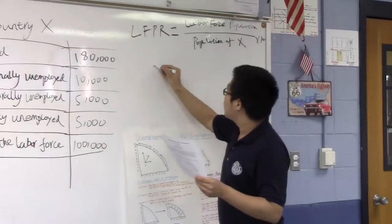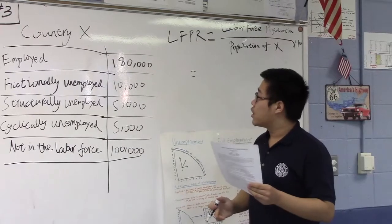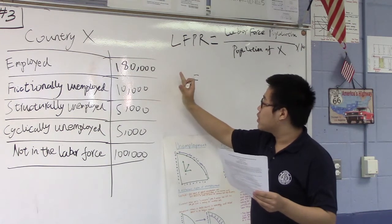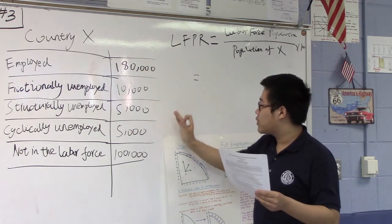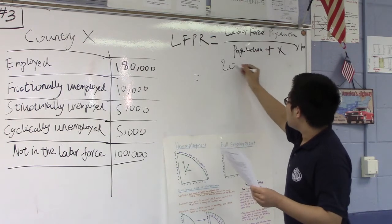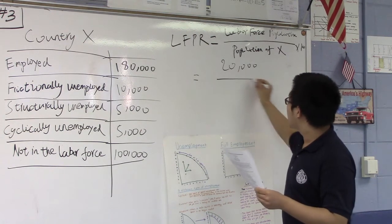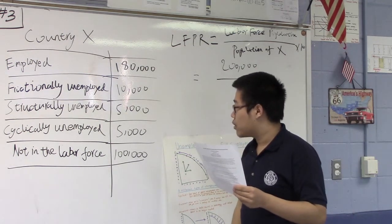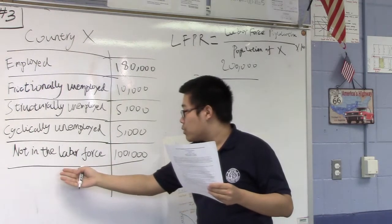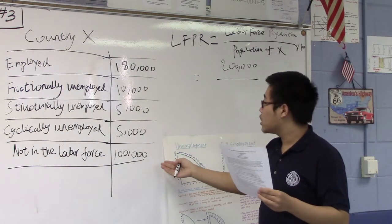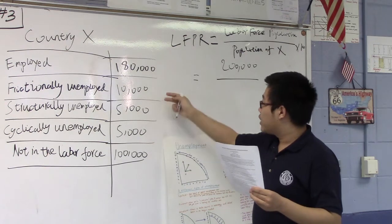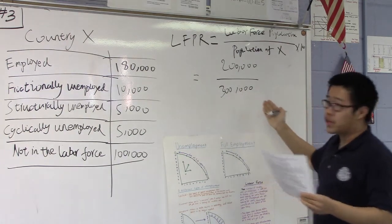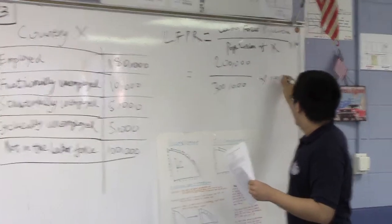From last question we just learned that the whole labor force population in country X is 180,000 plus 10,000 plus 5,000 plus 5,000, which is 20,000. So 200,000. And now we've learned that from the table the people who are not in the labor force is 100,000. We add that with the 200,000, which is 300,000. This is the whole population of country X times 100.